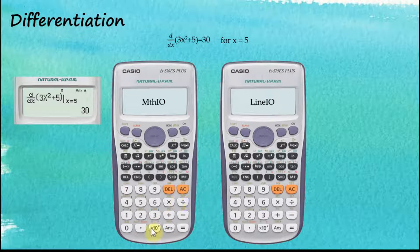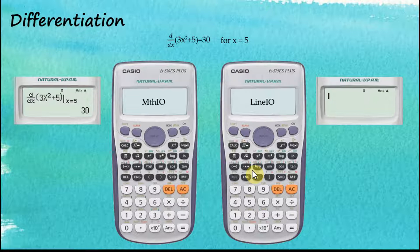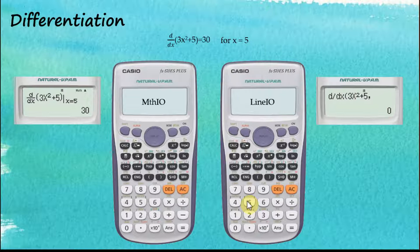For Linear Input, the first thing we do is tell the calculator we want to perform differentiation: shift differentiation. Then we key in the function three alpha x squared plus five, followed by shift comma to separate the function from the argument. The argument is five, so we enter five, then close bracket and press equal to get the answer.